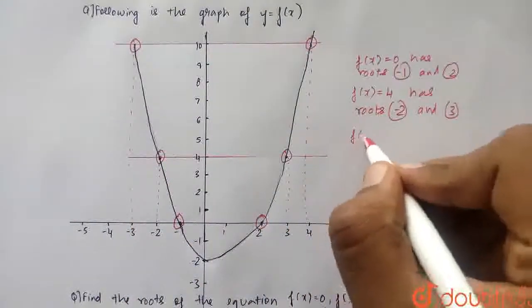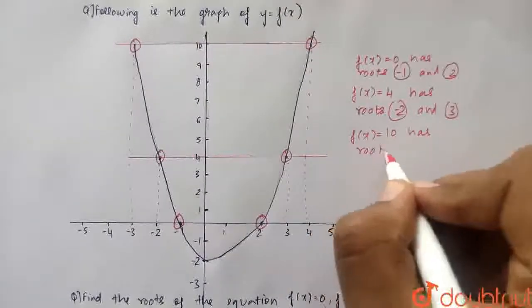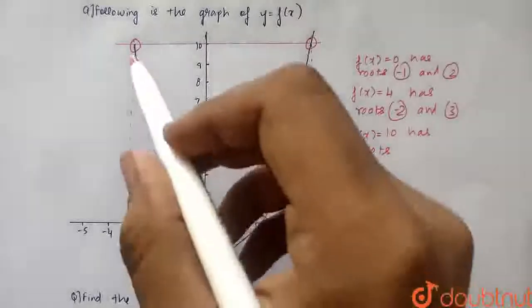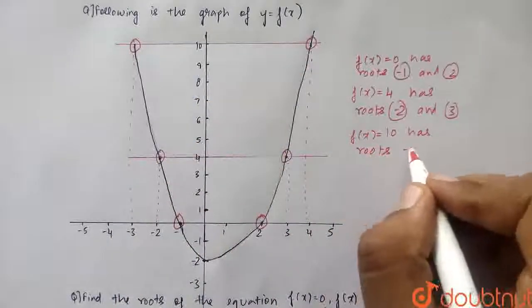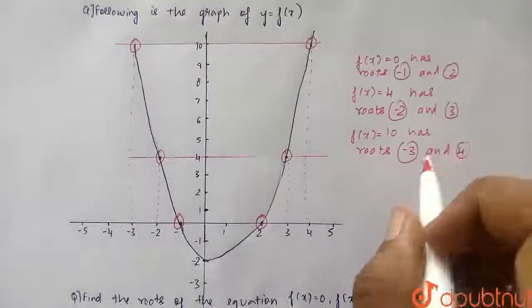So I will write here, f of x is equals to 10, has roots. So basically, it has roots minus 3 and 4. I will write here minus 3 and 4. So these are the answer.